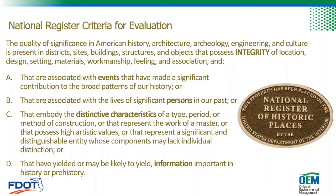Only one of these criteria needs to apply for a resource to be considered significant, but it also has to possess integrity — meaning it's still able to convey the characteristics that make it significant. For example, if we're discussing a significant structure but it's so deteriorated that it's in ruins, it doesn't possess integrity and would not retain its historic significance. If, after a field survey and evaluation, there are no historic properties in our APE and DHR concurs, we're done at Step 2. If we do have historic properties in our APE, we have to assess the project's effects on them, bringing us to Step 3.